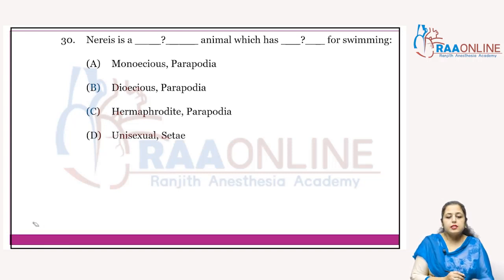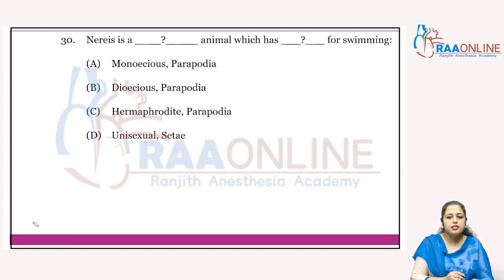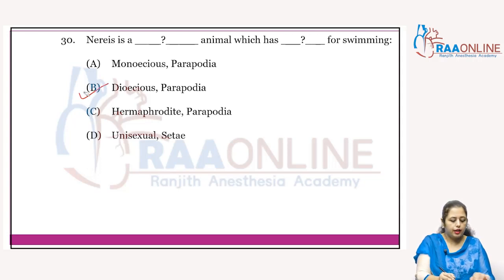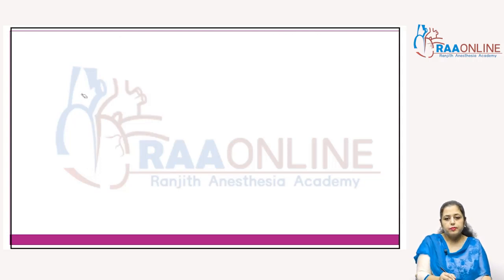Nereis is an annelid, and it is a dioecious animal which has parapodia for swimming. Answer is B.